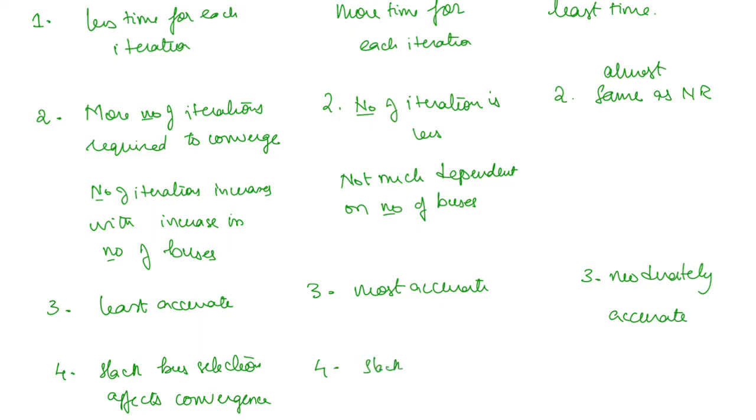Slack bus selection does not affect much, and in fast decoupled flow it moderately affects convergence.